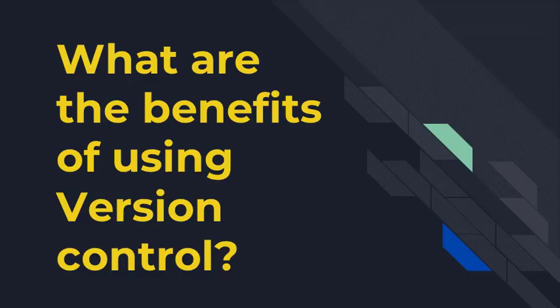Version control systems help to solve this problem by keeping a single updated version of each file with a record of all previous versions and a record of exactly what changed between these versions. Which brings us to the next major benefit of version control: it keeps a record of all changes made to the files. This can be of great help when you are collaborating with many people on the same files.